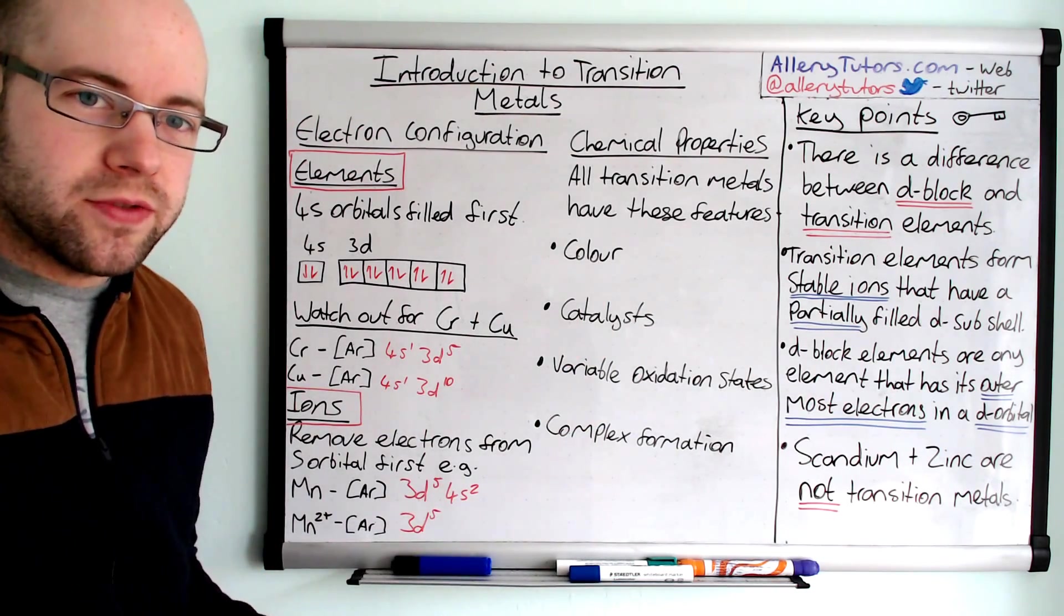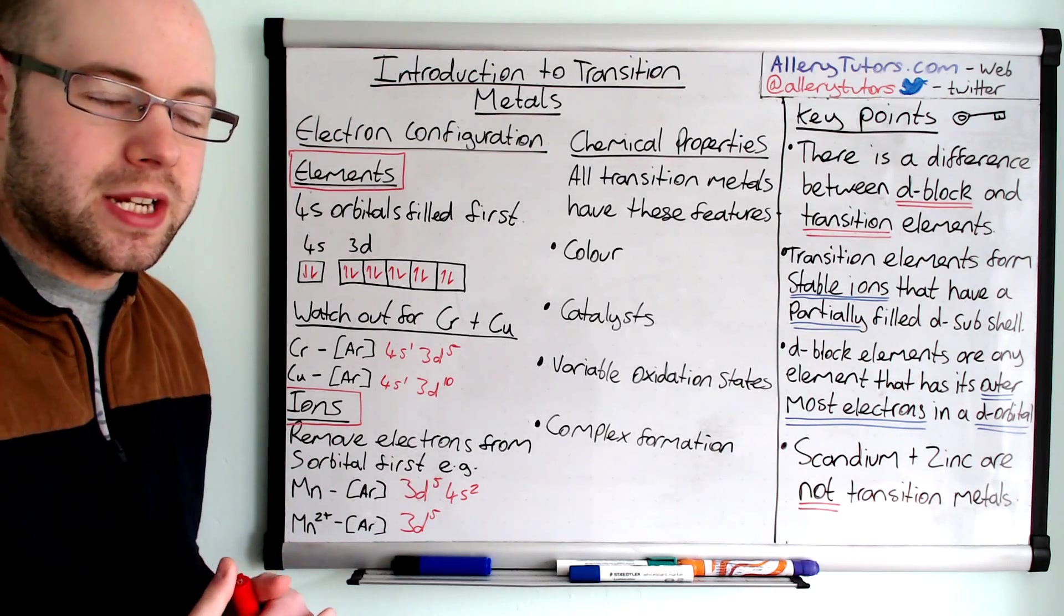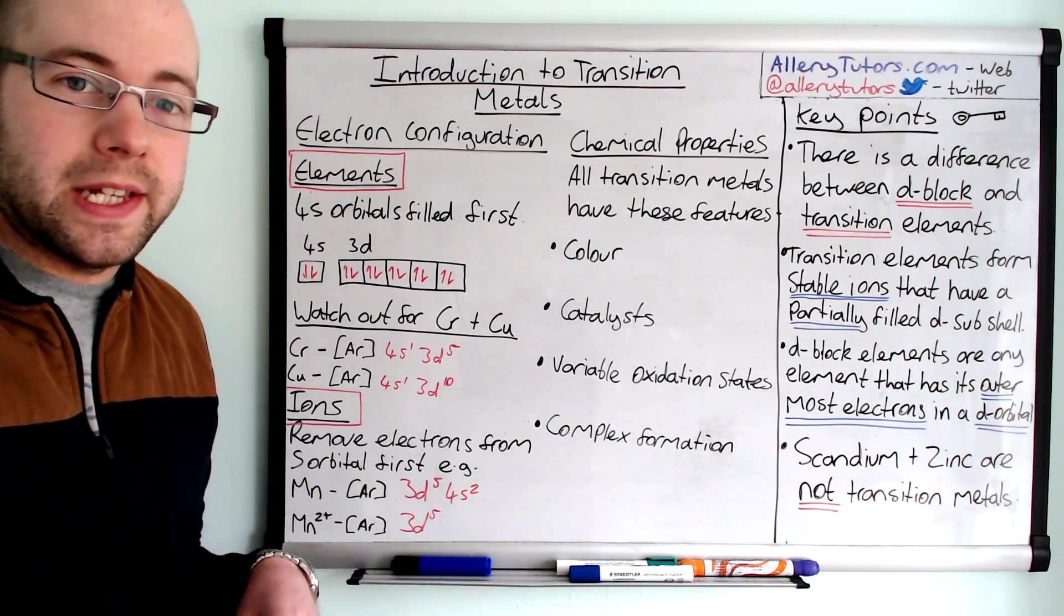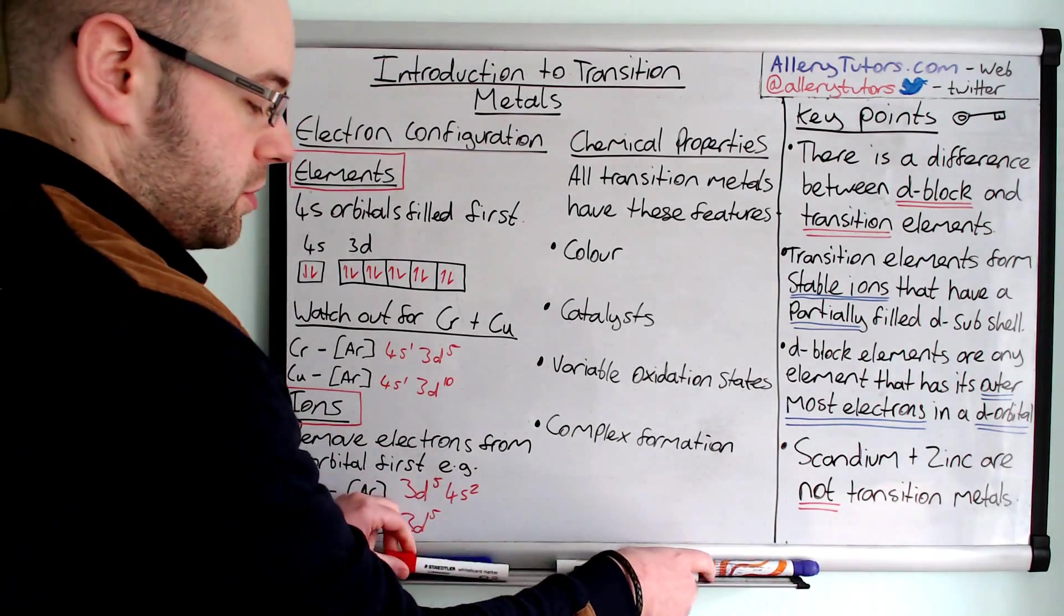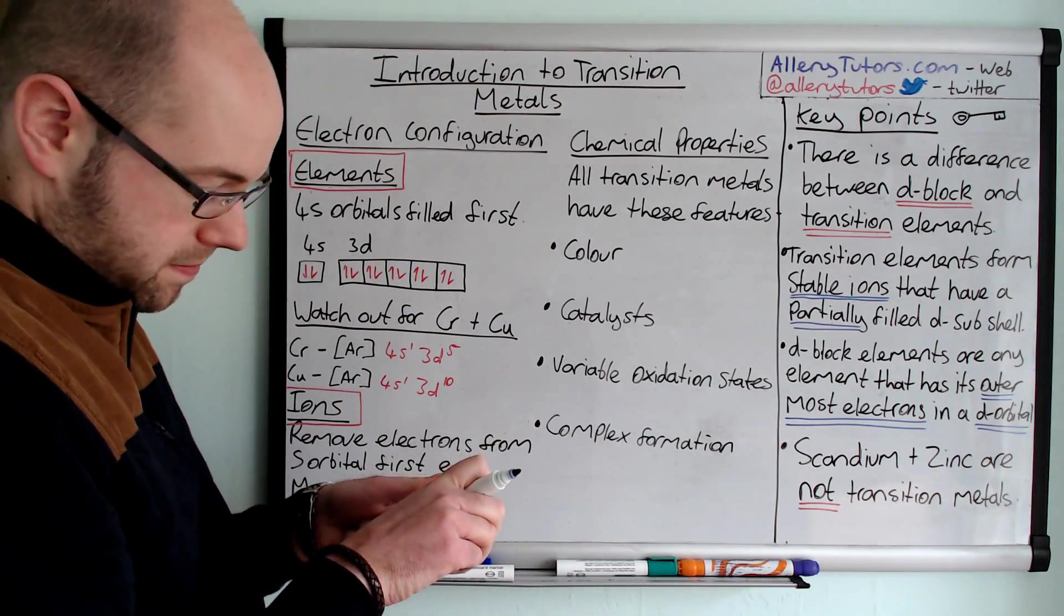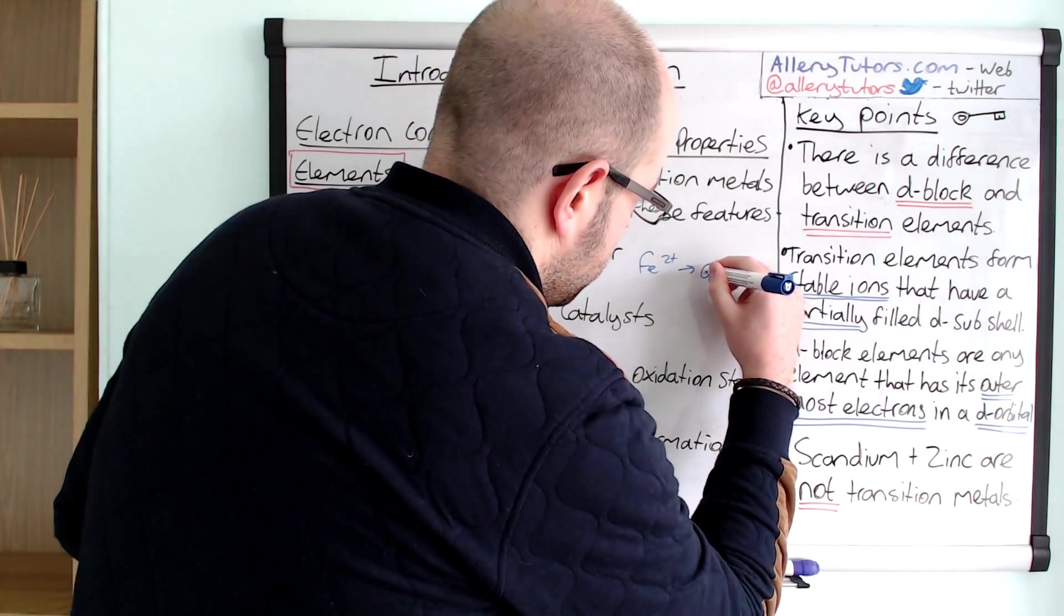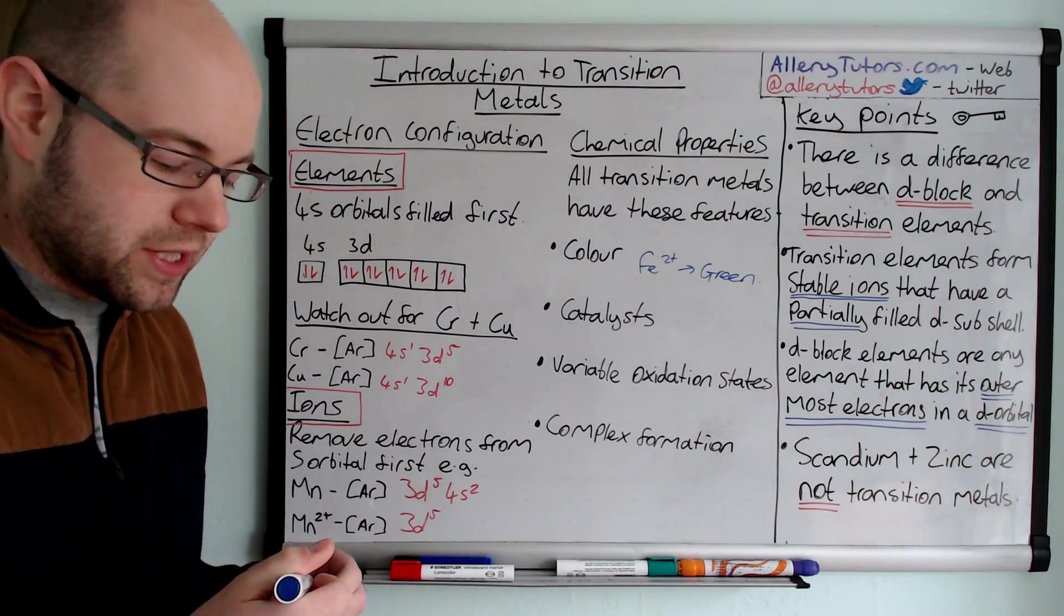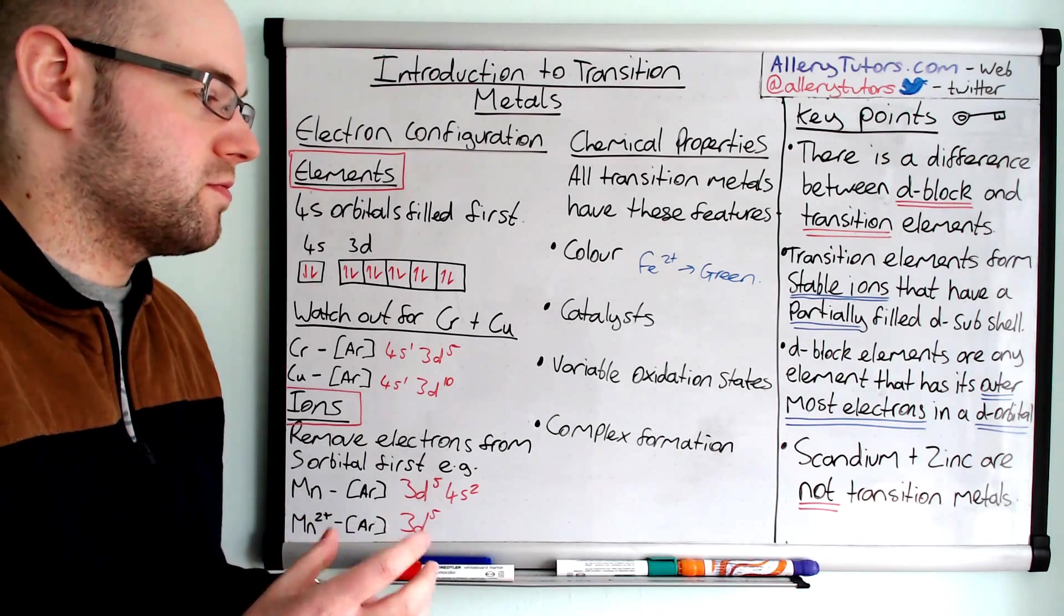Just coming on to the last bit, just looking at some chemical properties of transition metals. They all have certain things in common. They're really useful in industry in particular for things like catalysts and paints. So, one of the features of a transition metal is colour. Now, for example, we can give an example for colour. For example, you might have iron. Fe2+, for example, would have a green colour. Fe3+ might be a red, like a reddish orange colour. So, a lot of these transition metals are colourful metals.